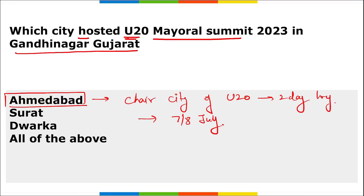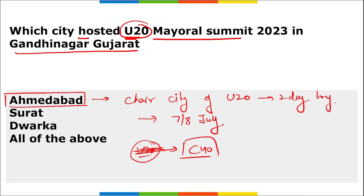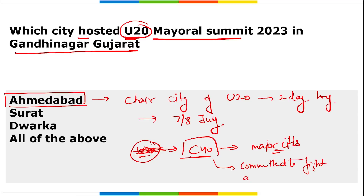The handover was mandated by U20 conveners — that is C40 Cities under United Cities and Local Government. C40 is a group of major cities committed to fighting climate change, connecting around 96 of the world's largest and most influential cities.